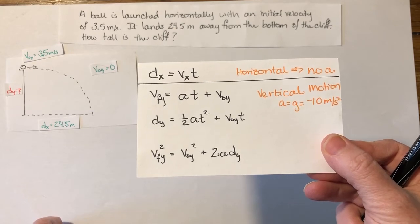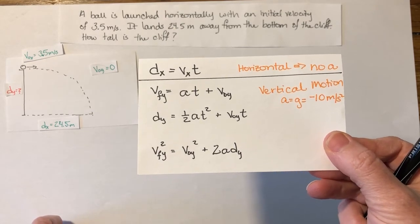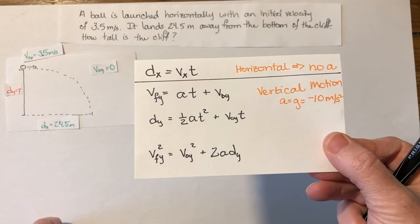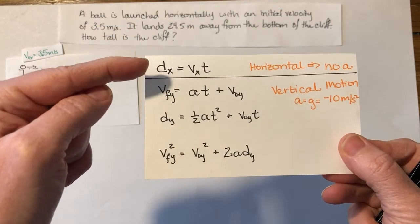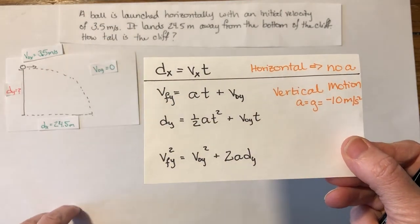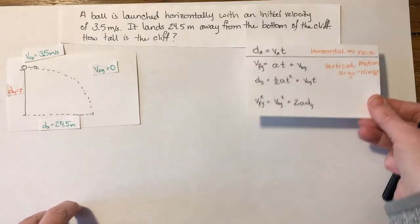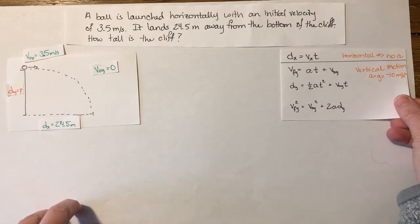because I have initial velocity in the x direction, and I have distance in the x direction, I'm going to use this first equation. Distance equals rate times time in order to find time of flight.